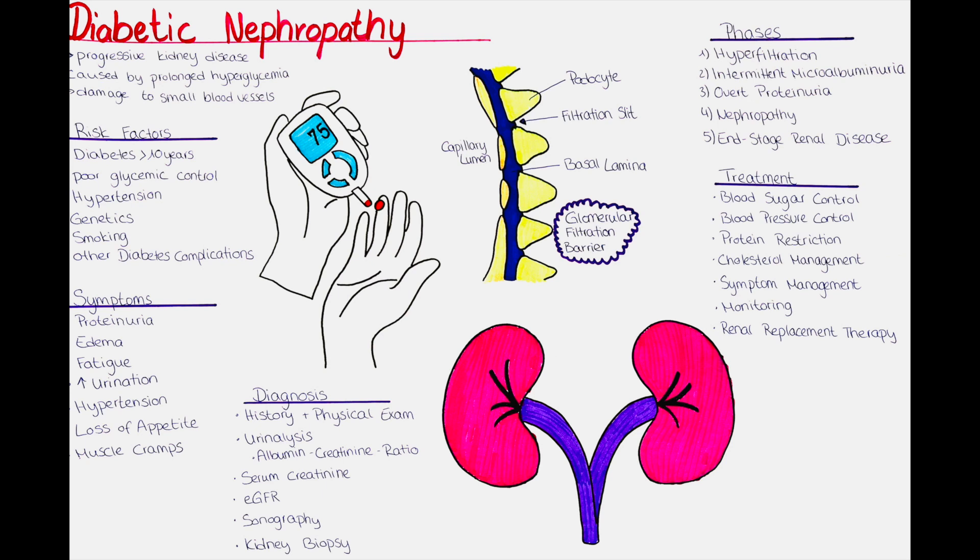The kidneys are responsible for filtering waste products and excess fluids from the blood, which are then excreted in the urine. However, when diabetic nephropathy develops, the kidneys' ability to perform this function is compromised and the glomerular filtration barrier is damaged.